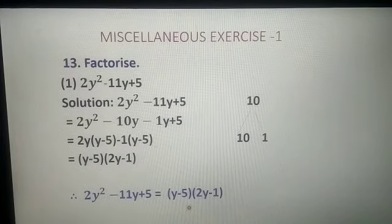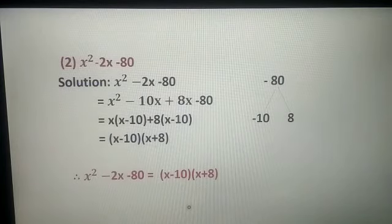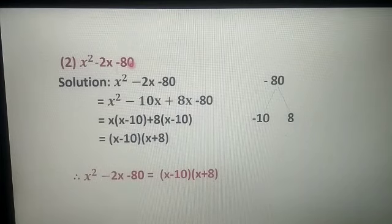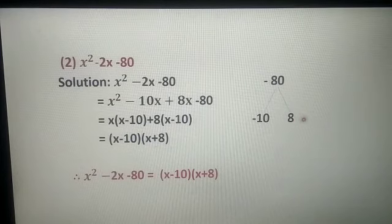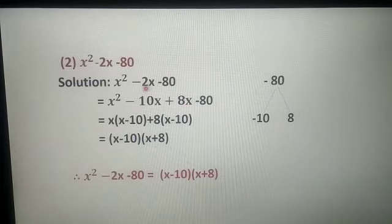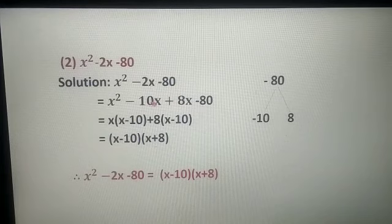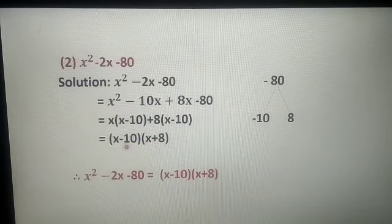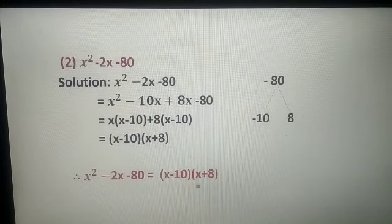Question 13, second sum: x² - 2x - 80. Coefficient of x² is 1, constant is -80. Factors of -80 giving middle term -2 are -10 and +8, since -10 + 8 = -2. So: x² - 10x + 8x - 80. Taking x common from first two terms gives (x - 10), and taking 8 common from last two terms gives (x - 10). Final answer: (x - 10)(x + 8).